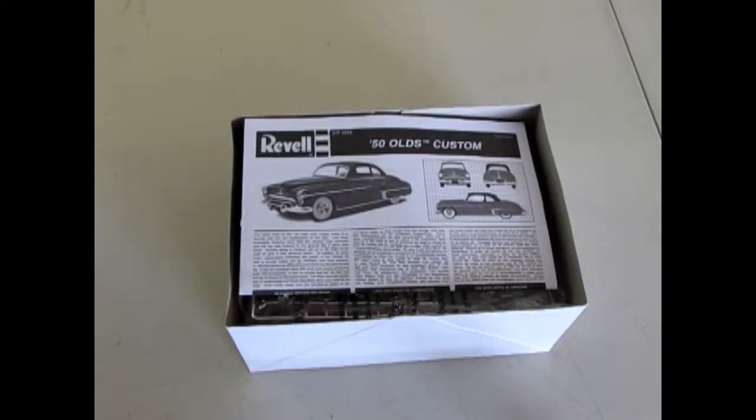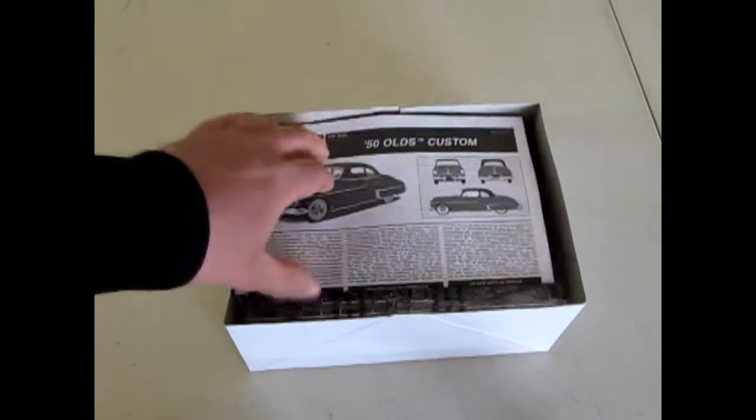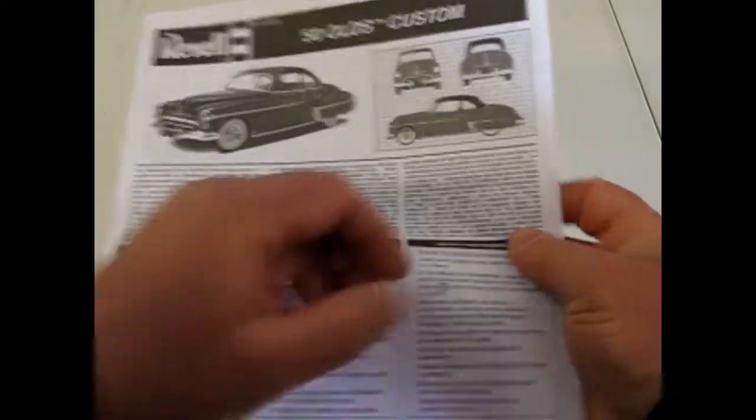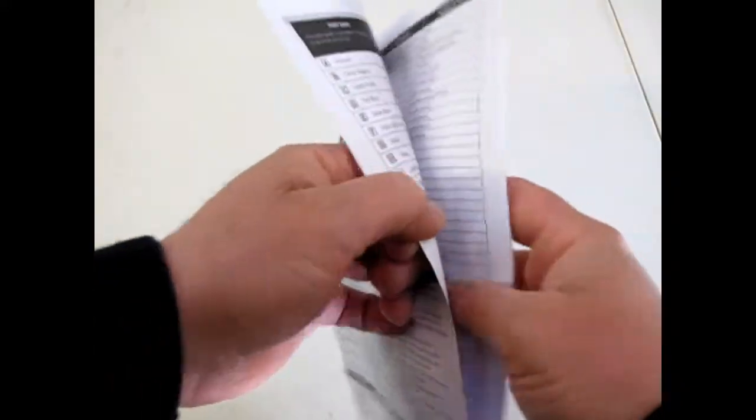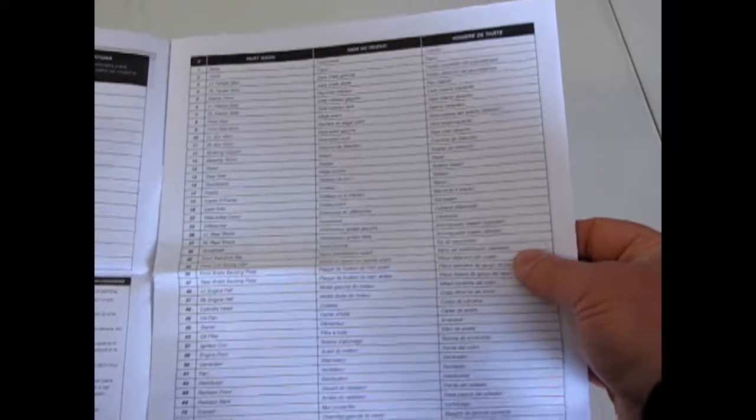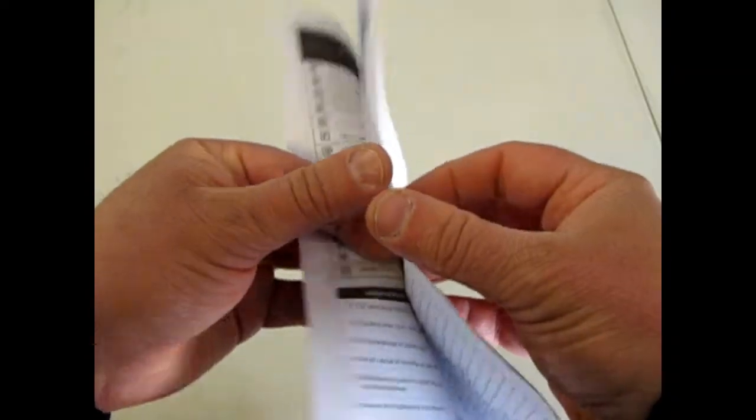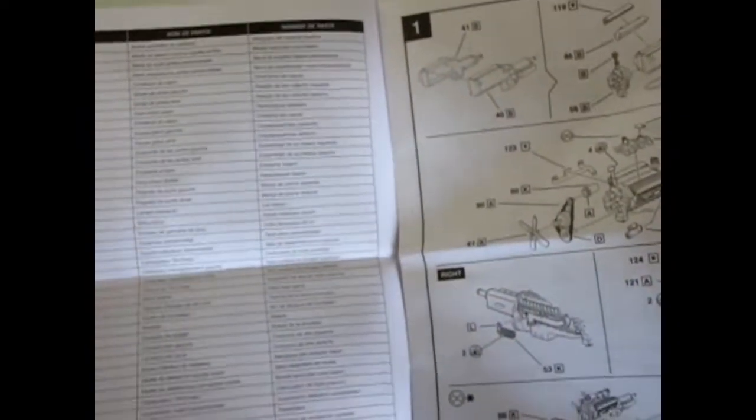And as we open up the lid, we're confronted with a very nice instruction sheet. And here they list off all the body parts that come with the kit, as well as a paint chart. And there's a lot of pieces to the kit.